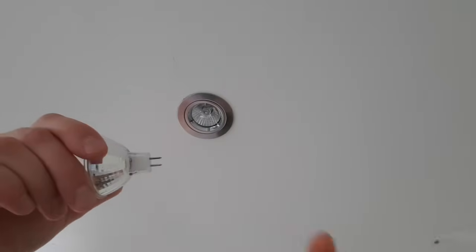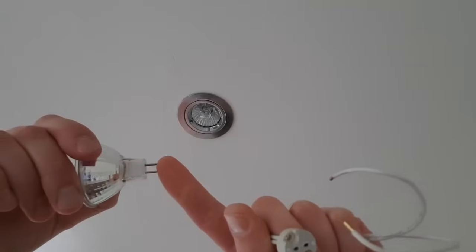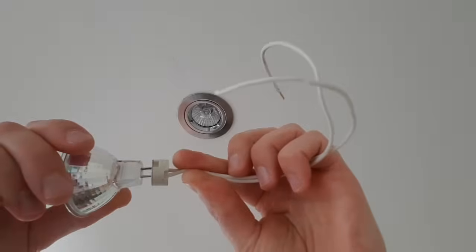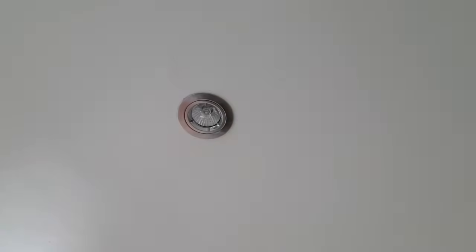The other alternative is low voltage, and you can see it actually just has two straight prongs on it. Typically they're just pushed straight into the lamp holder. So that's the two differences.